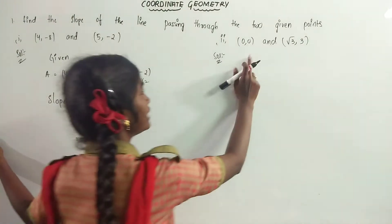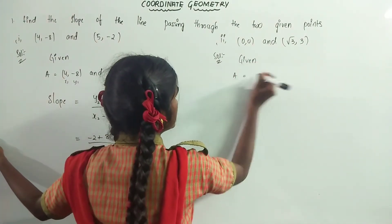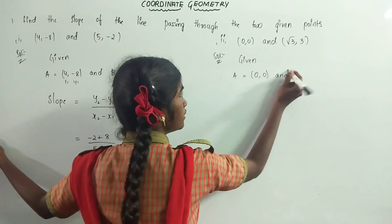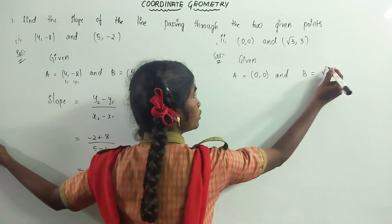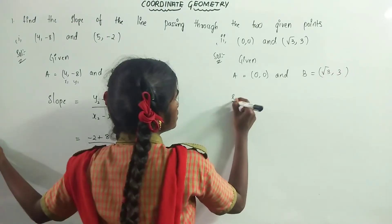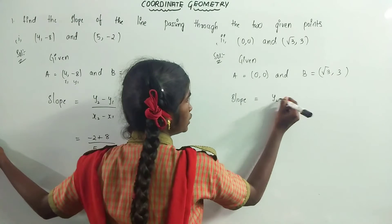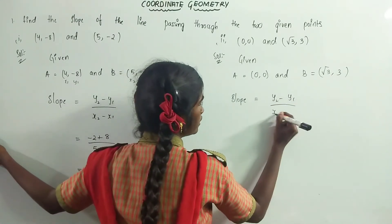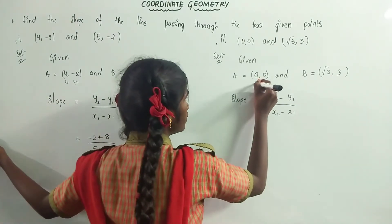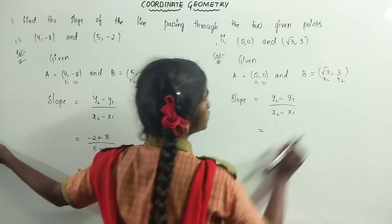Now we have to find the second one. Given: A is equal to (0, 0) and B is equal to (√3, 3). Slope is equal to y2 minus y1 by x2 minus x1. Here x1, y1, x2, y2 are identified.